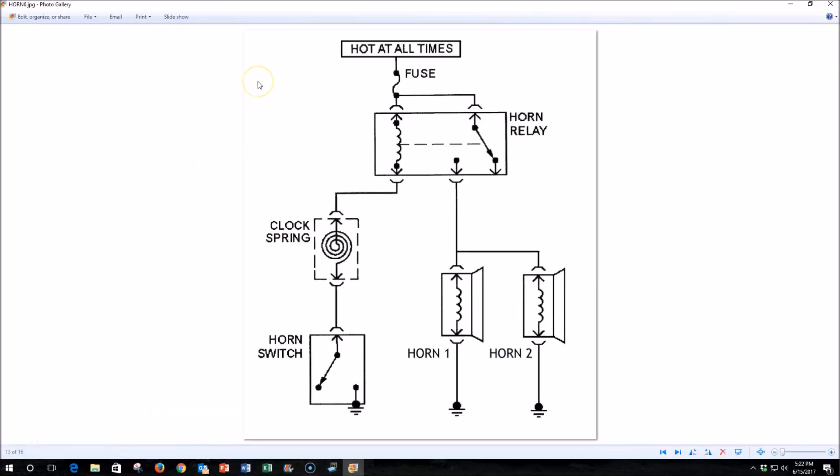Here's an example of a wiring diagram that has a clock spring in it. You'll see this clock spring is in between the horn switch, which is in the steering wheel, and the horn relay. So the wire that goes out to the horn button in the steering wheel must pass through this clock spring.